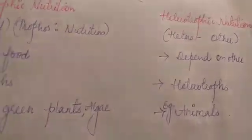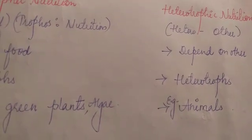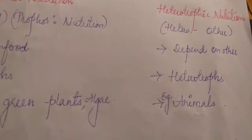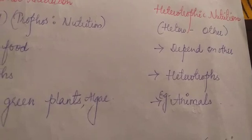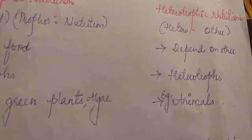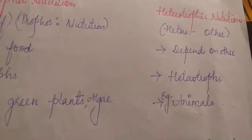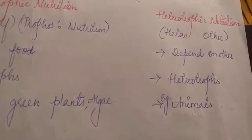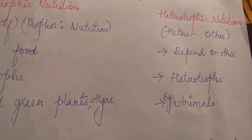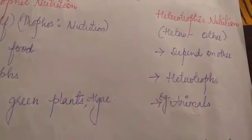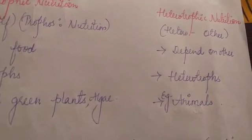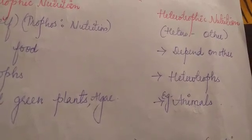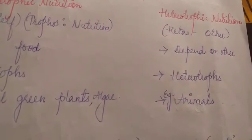Heterotrophic nutrition is a mode of nutrition in which organisms can't prepare their own food and depend on other organisms for their food. These organisms are called heterotrophs. The example is all animals.